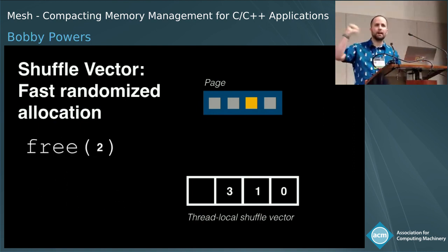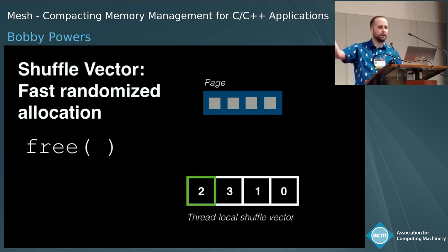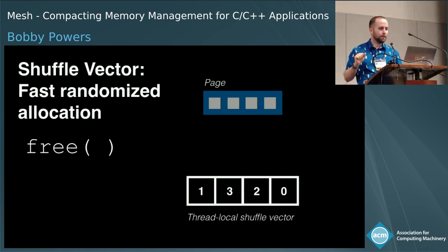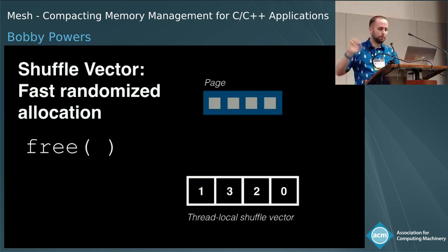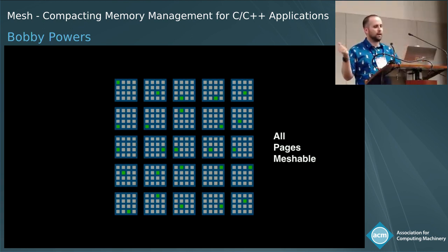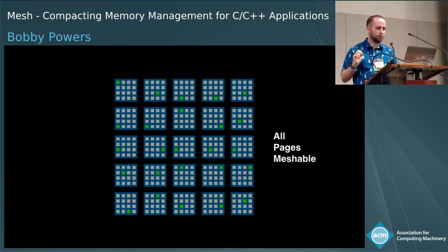When an object is freed, we reverse the math to get an offset back, stick it back on the array, and then perform one round of the shuffle — swapping it with another offset chosen uniformly at random — to ensure that even if a program is allocating and freeing in a loop, we distribute objects across pages. This ensures that when we have lots of low-occupancy pages, we can confidently recover a lot of memory.